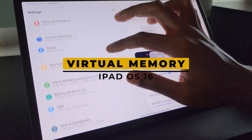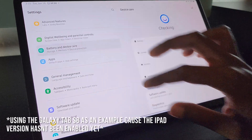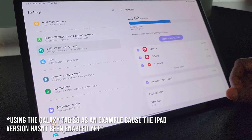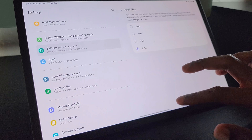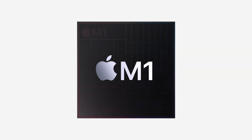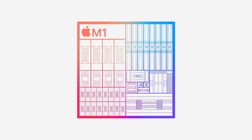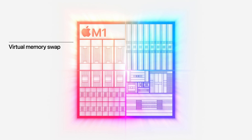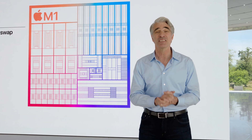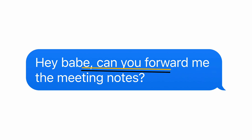For the first time on iPad, we get a virtual RAM feature. The ability to add extra memory in exchange for storage space is something that already existed on Android devices like Samsung in the form of RAM Plus. It's great that Apple is adding it now. When memory on the iPad begins to run low, it'll kick over to virtual RAM using reserved storage space, making multitasking features like Stage Manager run more efficiently and allowing more demanding apps to use more memory.